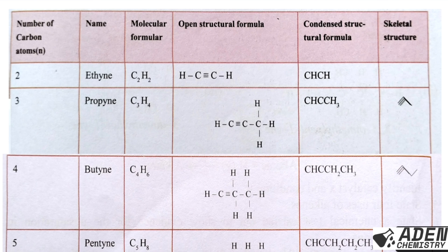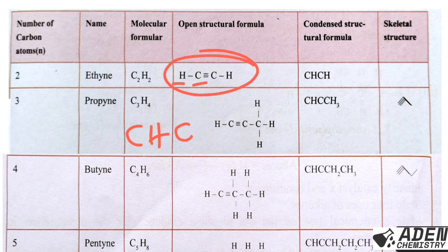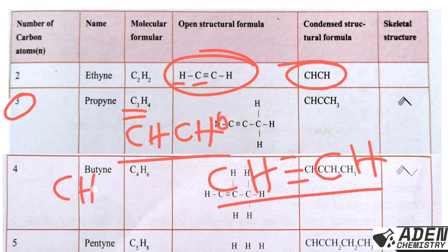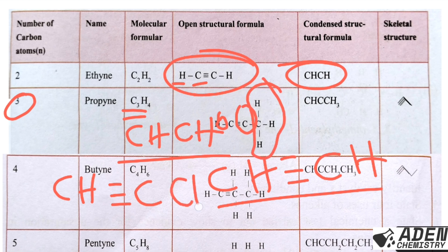For the condensed structural formula, once you know the open structural formula, you check each carbon. For ethyne: the first carbon has one hydrogen and the second has one hydrogen, so we write CH≡CH. For propyne: the first carbon has one hydrogen, then a triple bond, then the second carbon has no hydrogen, and the third carbon has three hydrogens — giving CH≡C–CH₃.